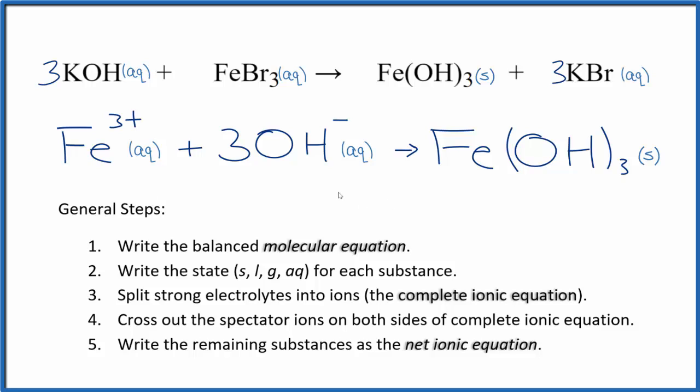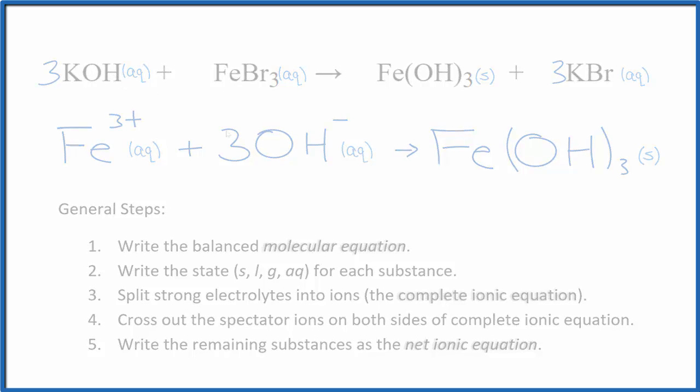This is the balanced net ionic equation for potassium hydroxide plus iron three bromide. Note that charge is balanced. We have a three plus and three times one minus, that's three minus, which adds up to zero, net charge of zero. Over here is neutral, net charge of zero. Charge is conserved, and if you count the atoms up, they're balanced too. This is Dr. B with the net ionic equation for KOH plus FeBr3. Thanks for watching.